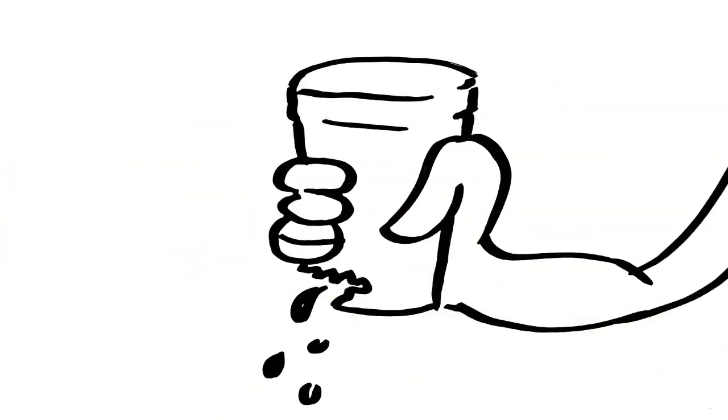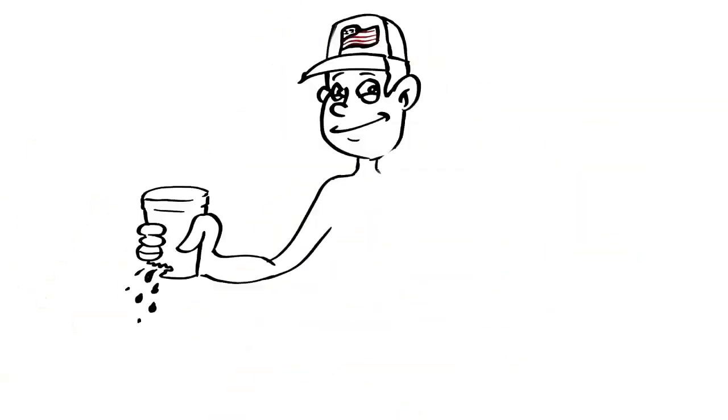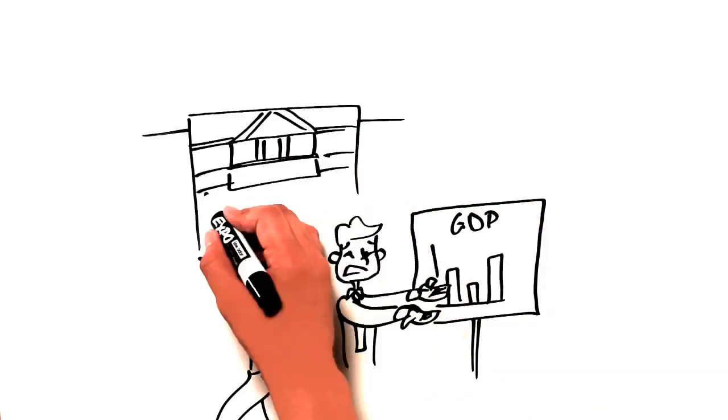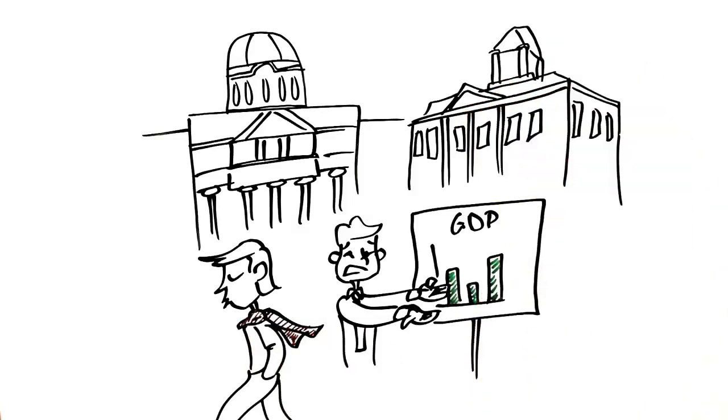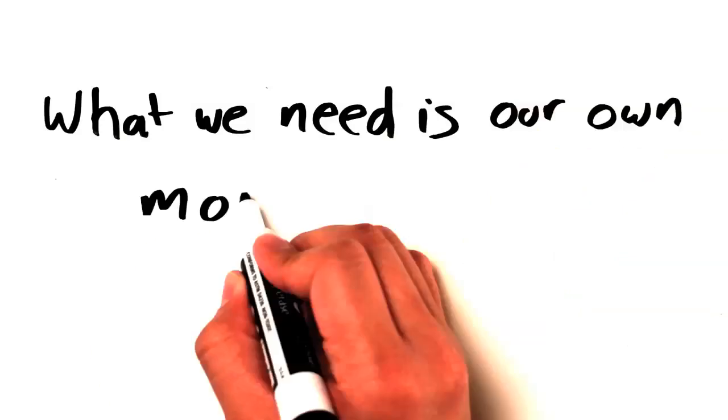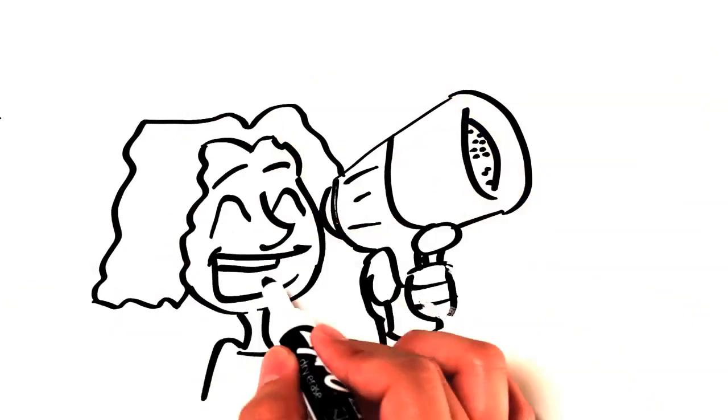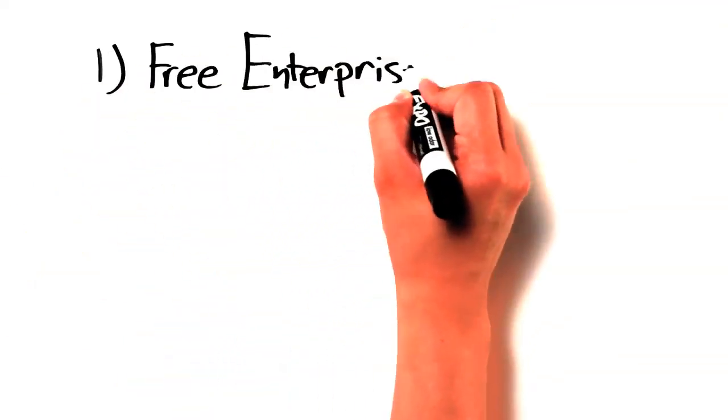We know the moral arguments against free enterprise don't hold water, and that they're leading America to be more and more like Greece, broke and hopeless. Sometimes we all feel helpless because our facts about the future of America seem to fall on deaf ears, while the government just grows and grows. What we need is our own moral argument. If we want to start winning, we need to start making the moral case for free enterprise. And it's actually pretty easy to do. The moral case has three key points.